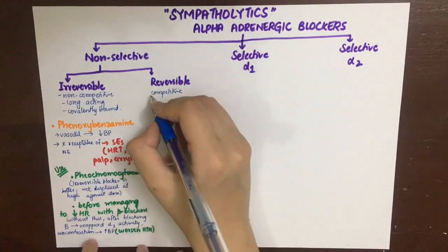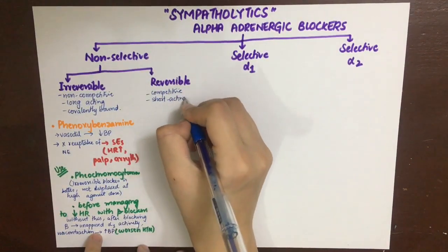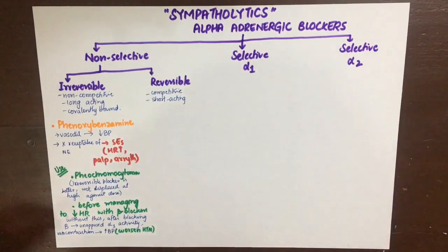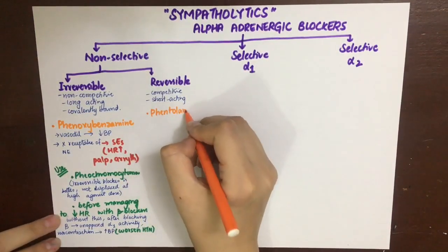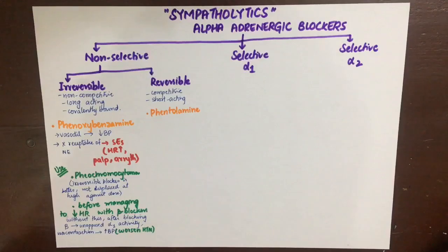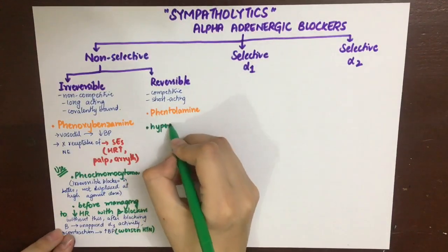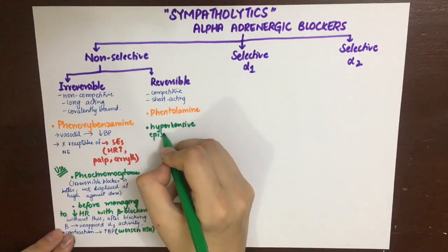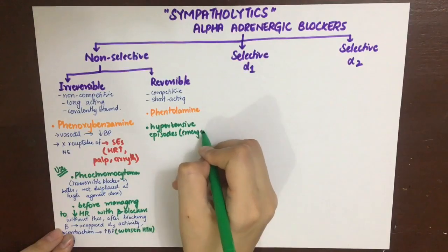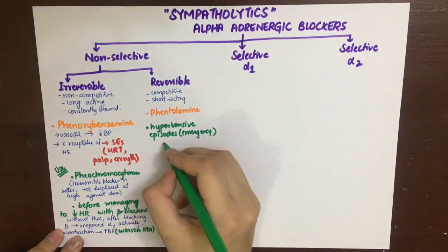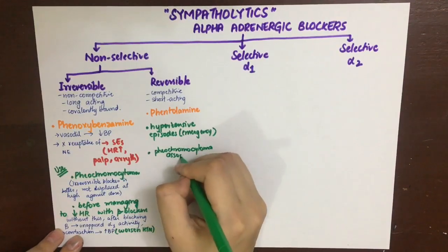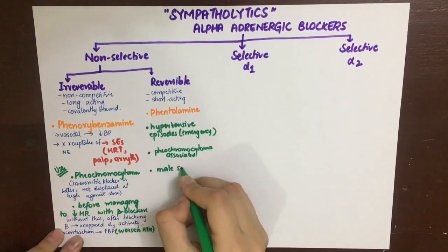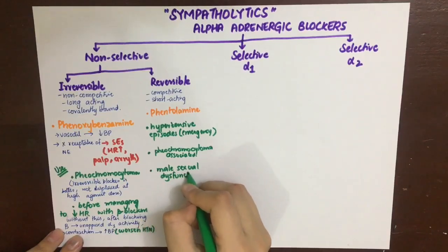The reversible non-selective alpha blockers are competitive antagonists at alpha receptors and are therefore short-acting. The key drug here is phentolamine, which is mainly used in hypertensive episodes and emergencies because it is short-acting and rapid-acting. It can also be used in pheochromocytoma-associated hypertensive episodes.